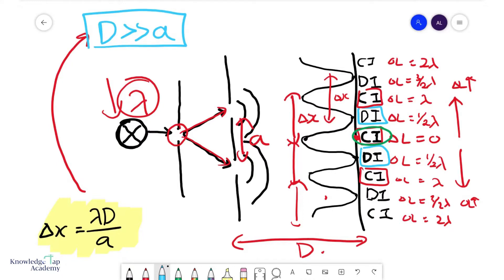If this condition is not fulfilled, you cannot use this equation. And then you will probably have to figure out your CIs and DIs by manually calculating the path differences and seeing how many wavelengths that is.